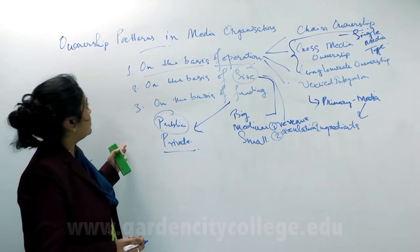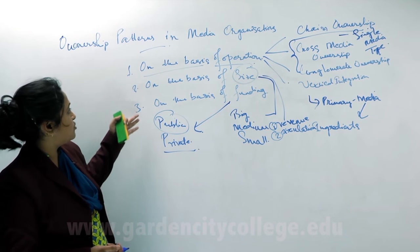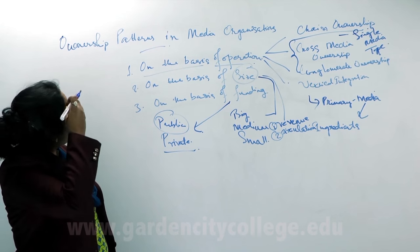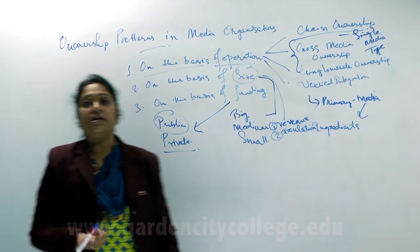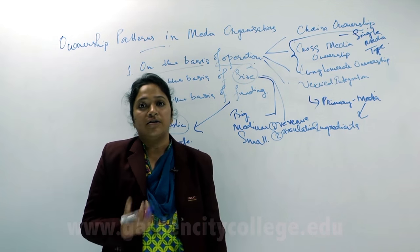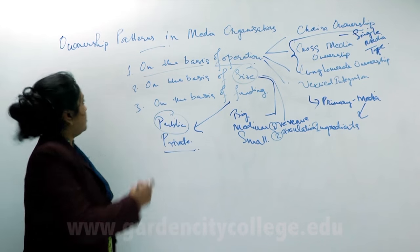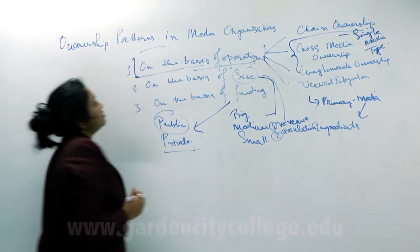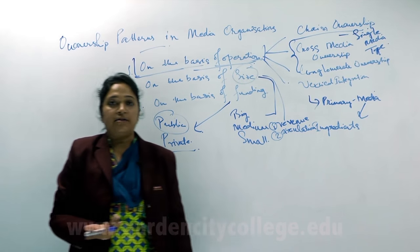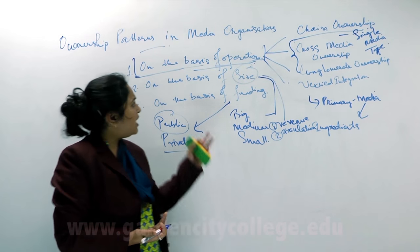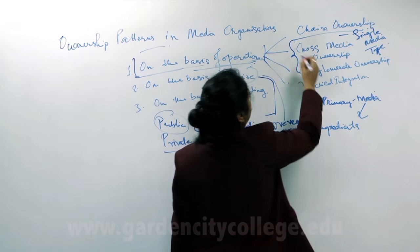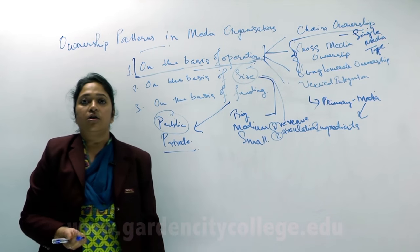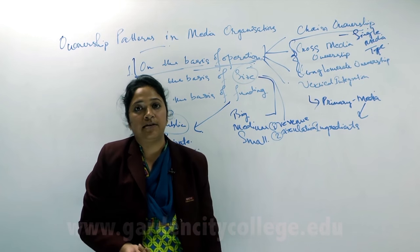So these are the three categories — on the basis of operation, on the basis of size, and on the basis of funding — that ownership patterns in media organizations are divided into. The most important is on the basis of operation, and from that, conglomerate and cross-media ownership is what is observed in the present times.